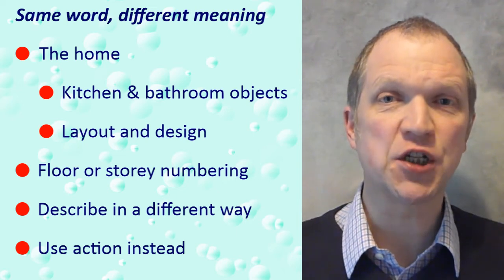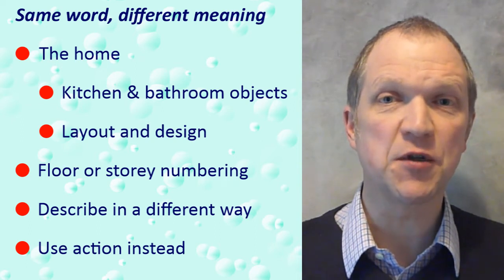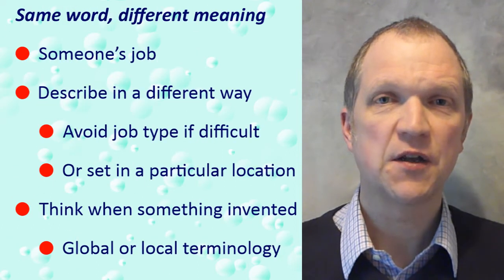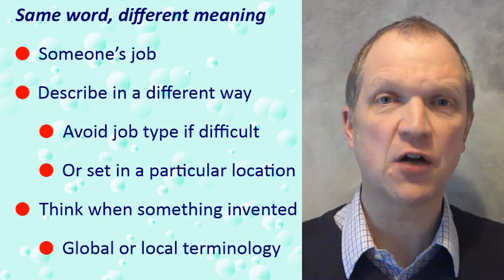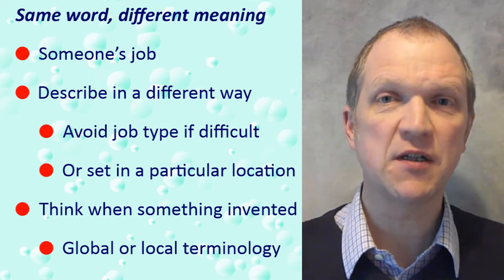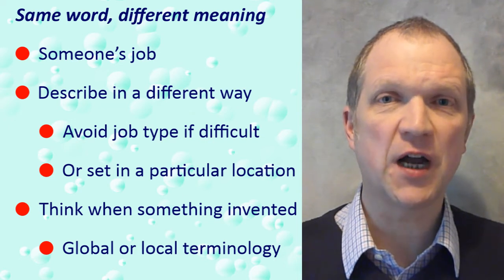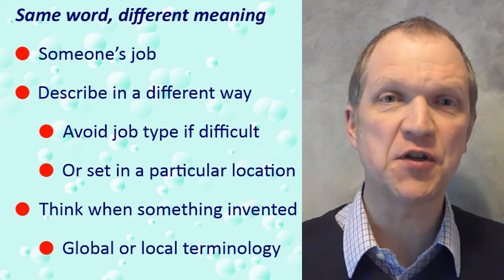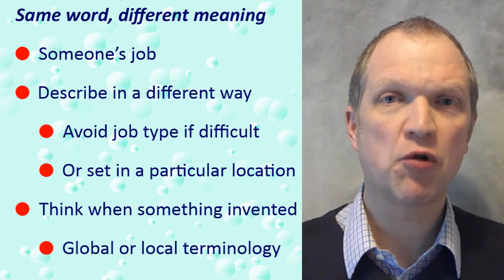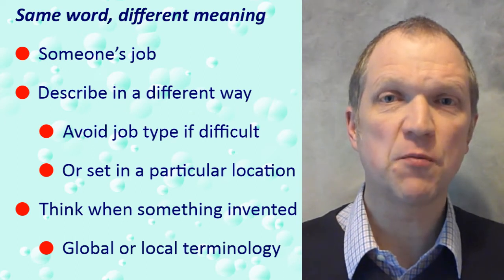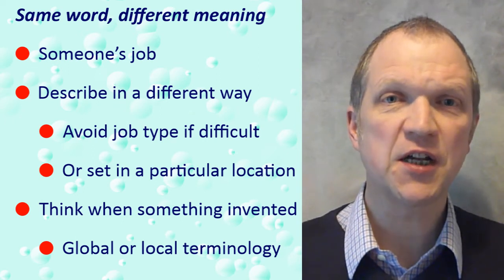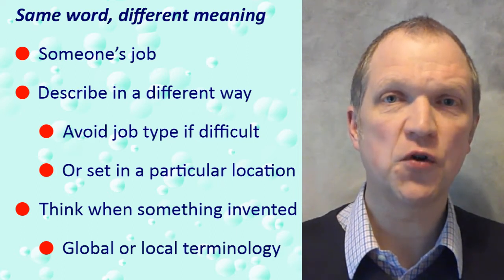Alternatively, a character's action in the story can show which floor of the building they are on – for example, if they enter the building from the street outside. The same job can have a different name or title in different countries. For example, someone who sells houses is an estate agent in the UK, while they're a realtor in the USA. It's difficult to find an alternative way to describe this job or profession. Therefore, I personally would probably avoid writing a story about this topic. However, if it's central to your story that your main character sells houses, then I'd suggest setting your story in a particular country, so that you can use the correct word for your main character's job.